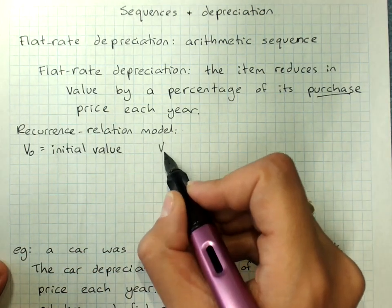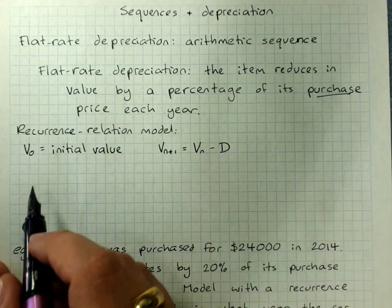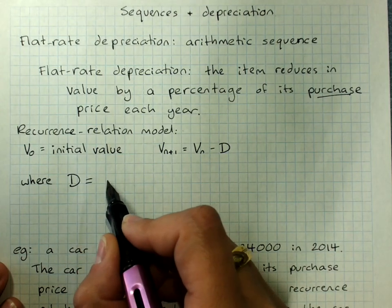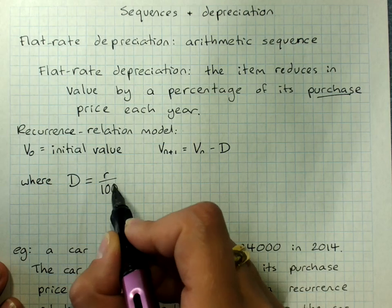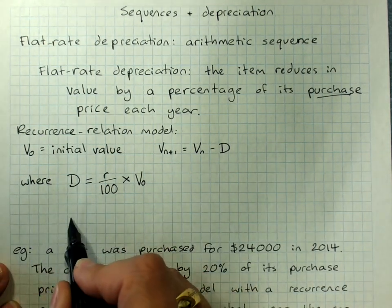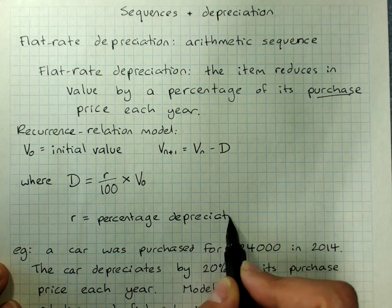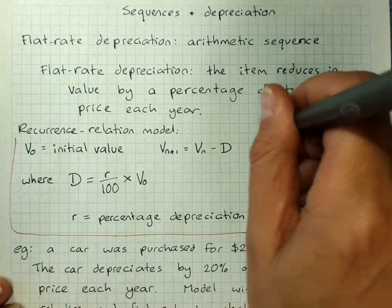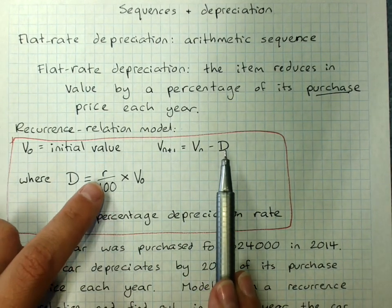Our rule is Vn+1 = Vn − D, where D is our common difference. D equals R over 100, to get it to a decimal, multiplied by V0, which was the initial price. R is the percentage depreciation rate. Because that's a fixed amount each year, it's arithmetic reduction. This is our recurrence relationship rule, and this tells us how we get D — it's just a percentage of the original amount.